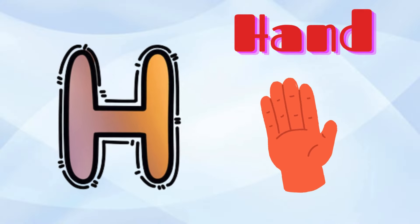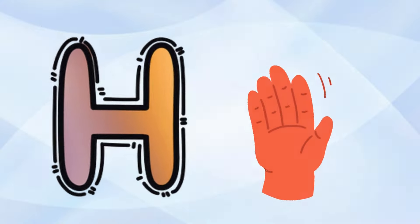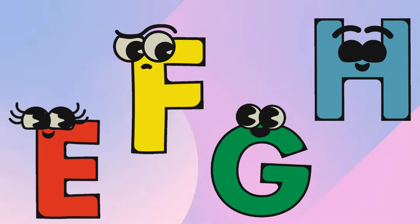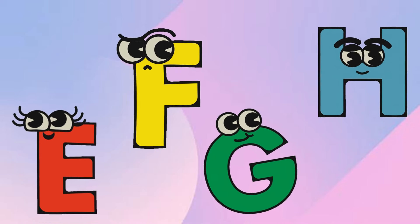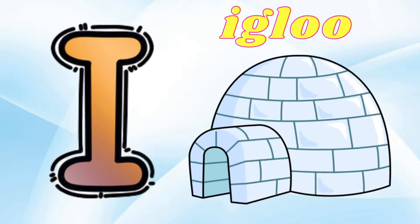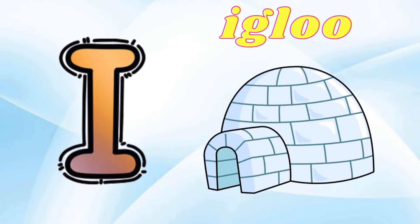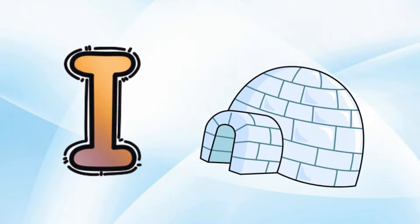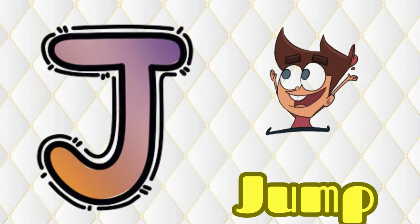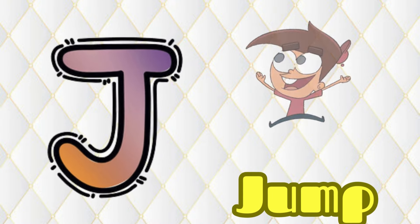H is for Hand, H-H-H-Hand. I is for Igloo, I-I-Igloo. J is for Jump, J-J-Jump.